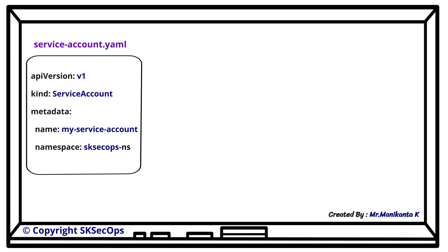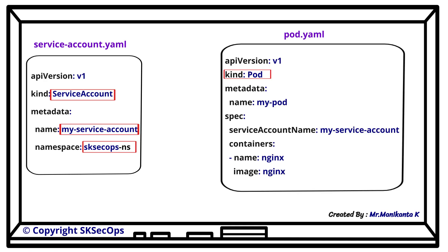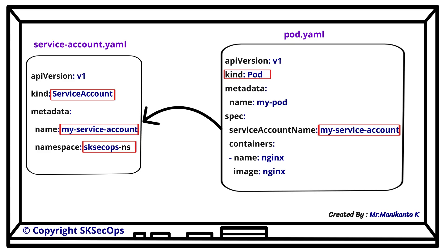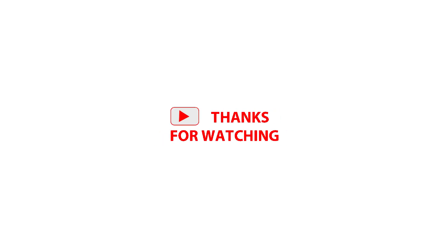Let's also understand how the service account manifest file looks and how the pod is associated with it. This is the serviceaccount.yaml. As it is a service account, we specify kind as ServiceAccount. I have given the name as my-service-account under metadata, and also specified the namespace as sksecops-ns. This is the service account manifest file. Now, to associate a pod with the service account, under the spec section of the pod, specify serviceAccountName as my-service-account.